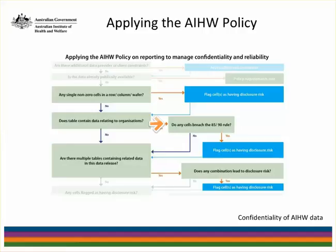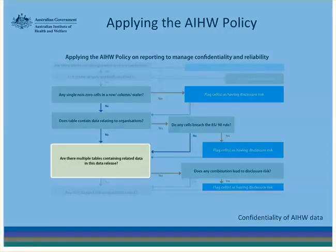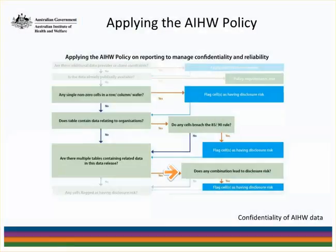At this point, we have to look beyond the table in question to consider whether there are multiple tables containing related data in this data release. If so, we have to look for any combination of tables that may lead to a disclosure risk. An example would be where one table contains the number of individuals within a cross-classification and the second table contains summary statistics about those individuals. If we identify any disclosure risks, then we add these to the list of flagged cells.